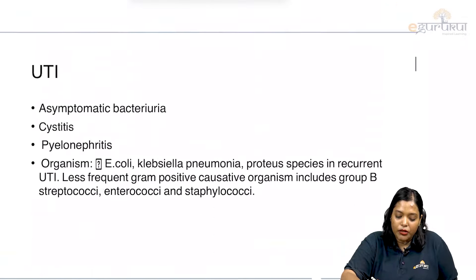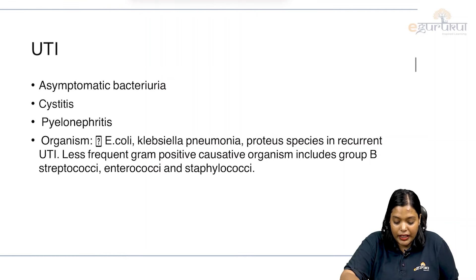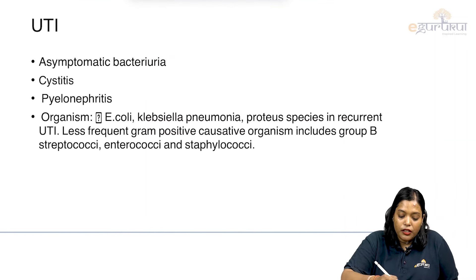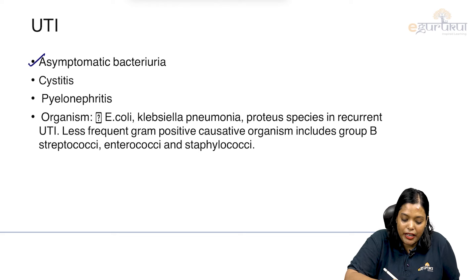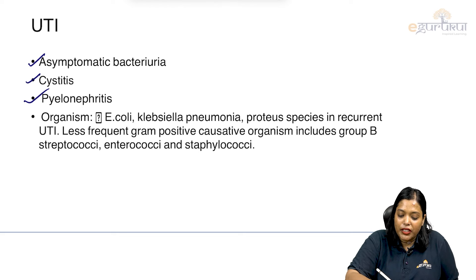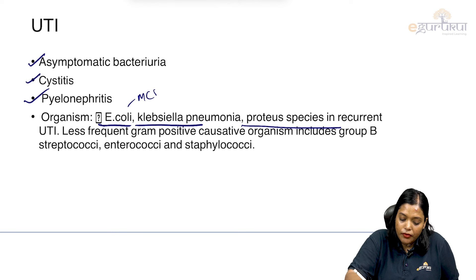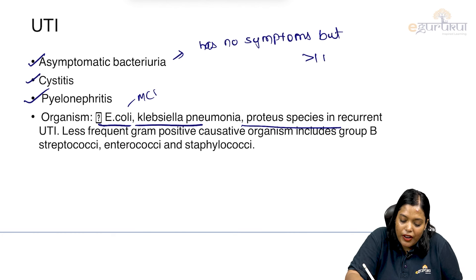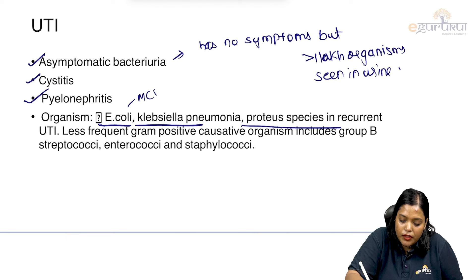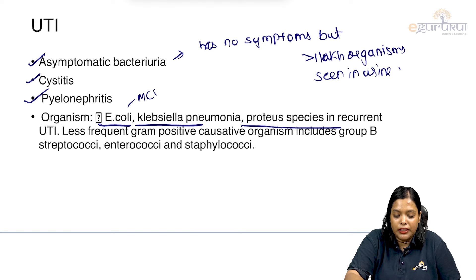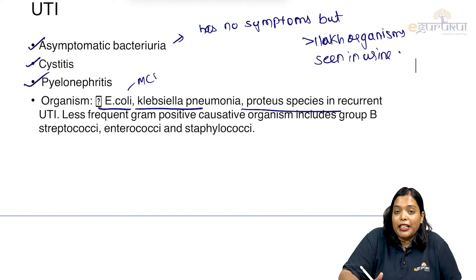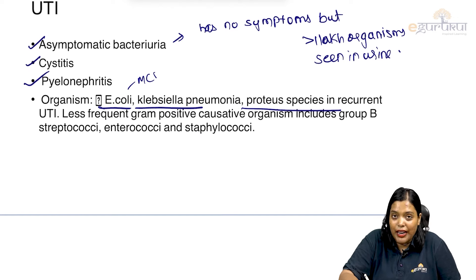UTI can also lead to preterm labor, and if untreated, it can progress to pyelonephritis. We have three varieties: asymptomatic bacteriuria, cystitis, and pyelonephritis. The causative organisms are E. coli, Klebsiella, and Proteus species in recurrent UTI — most commonly E. coli. Asymptomatic bacteriuria means the patient has no symptoms but more than 100,000 organisms are seen in the urine. If untreated, it can develop into cystitis and pyelonephritis.